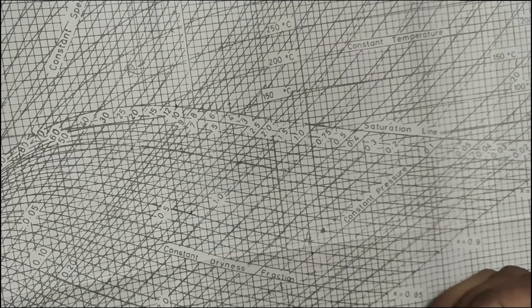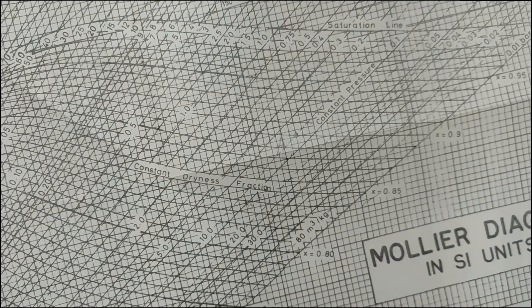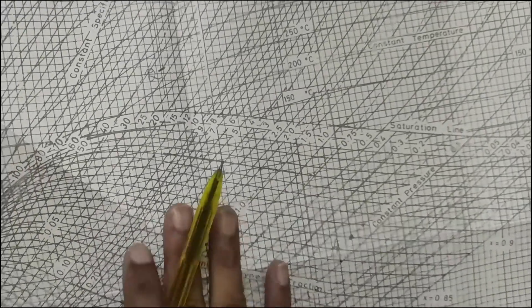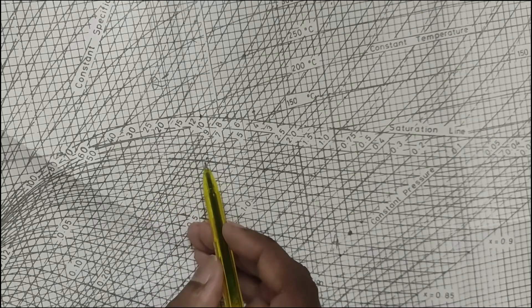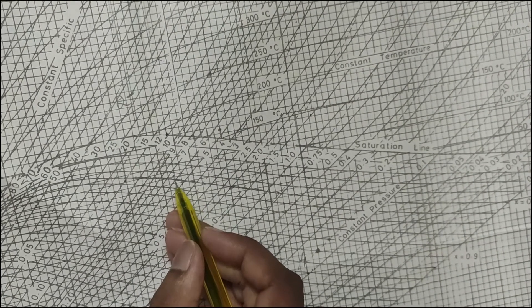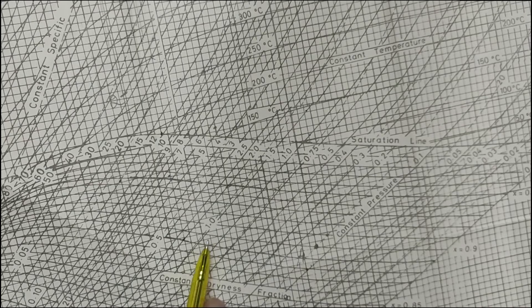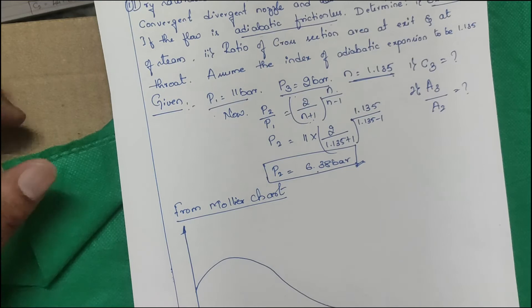Next, find specific volume. The specific volume curves (dotted lines) are in m³/kg. At 6.38 bar, the specific volume falls between 0.2 and 0.5, giving approximately 0.35 m³/kg. At 2 bar, it falls between 0.5 and 1, giving approximately 0.85 or 0.86 m³/kg. This is how to use the Mollier chart.